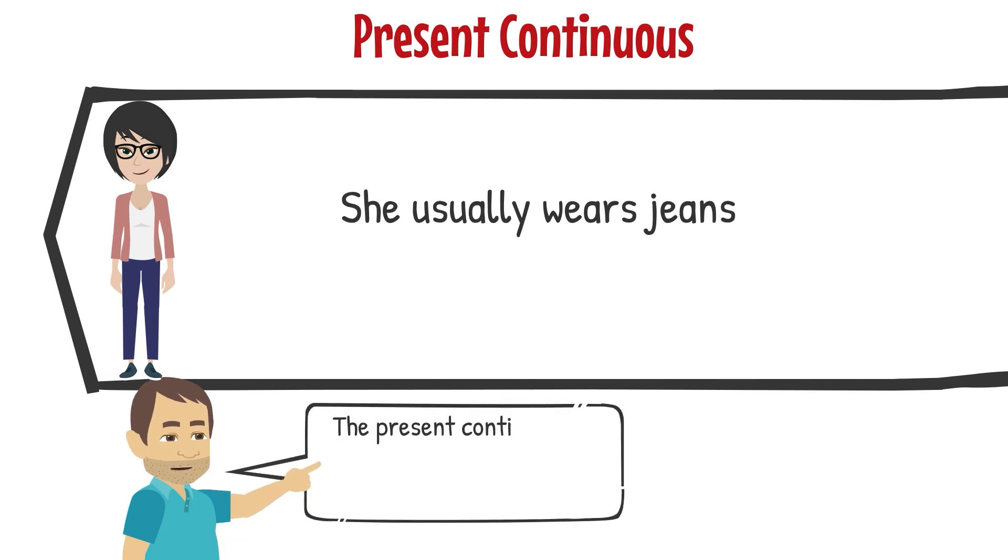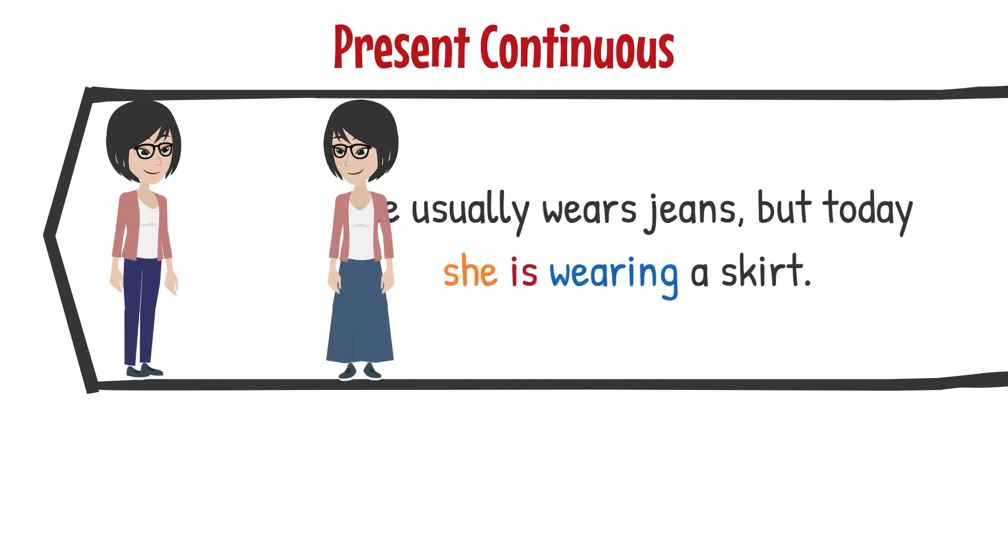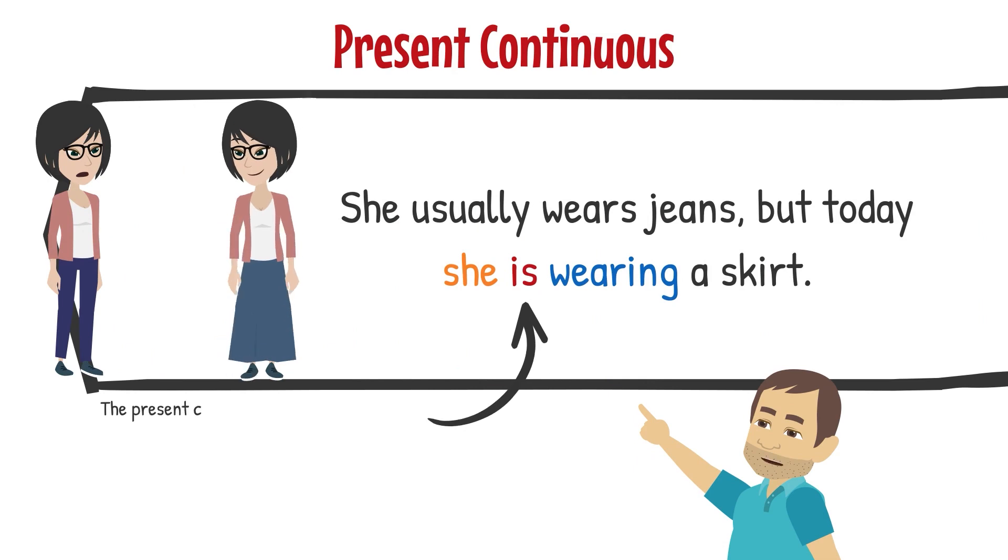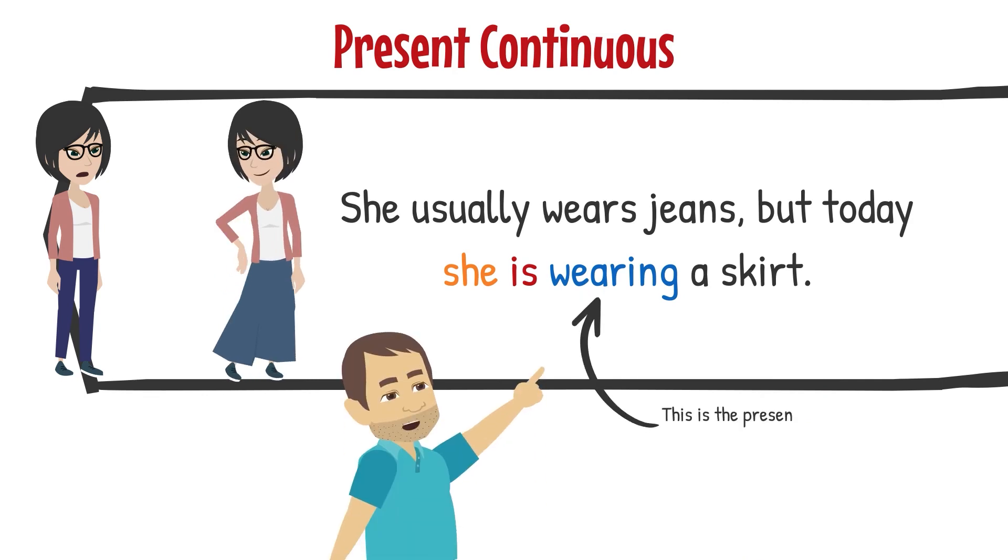The present continuous is used to describe a current and continued action. This is the present simple tense. It describes a repeated action. The present continuous uses the verb form be. This is the present continuous. It describes what is happening right now.